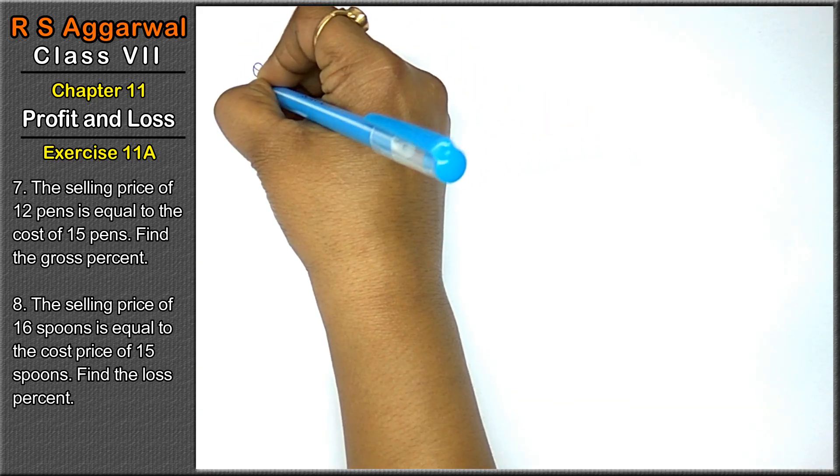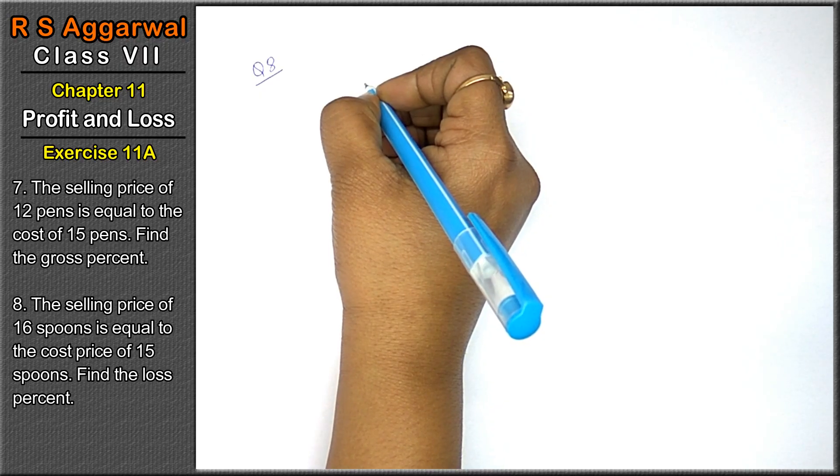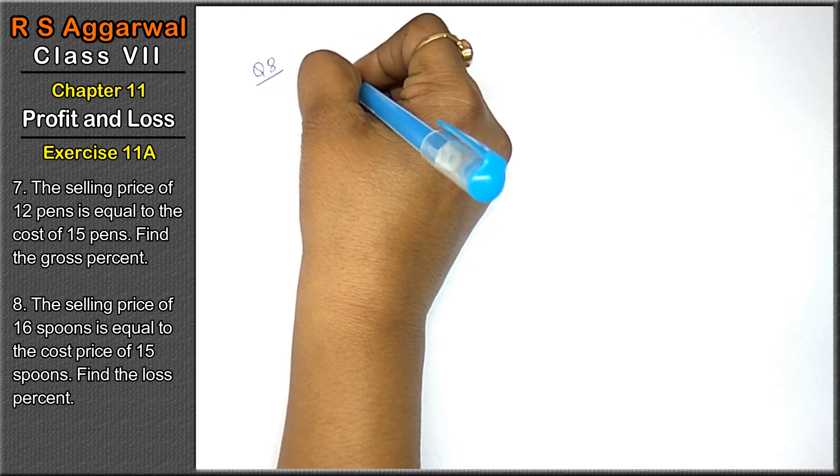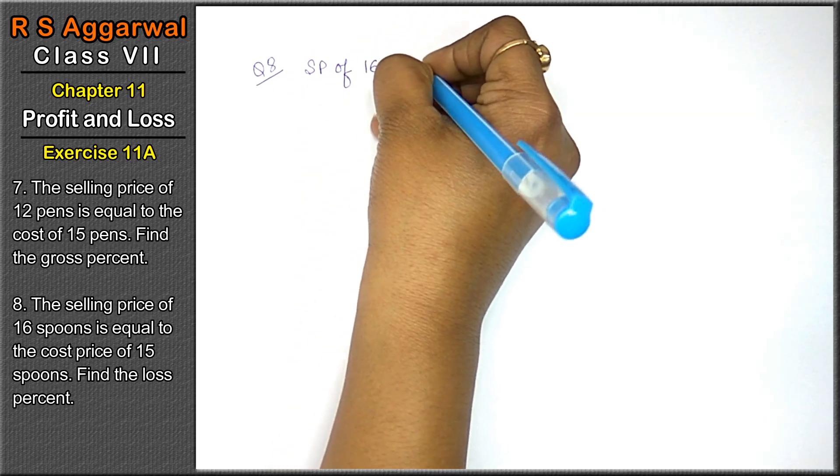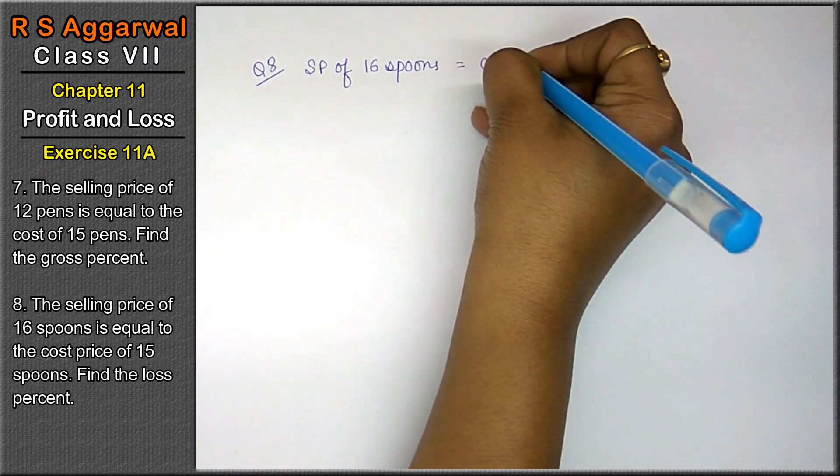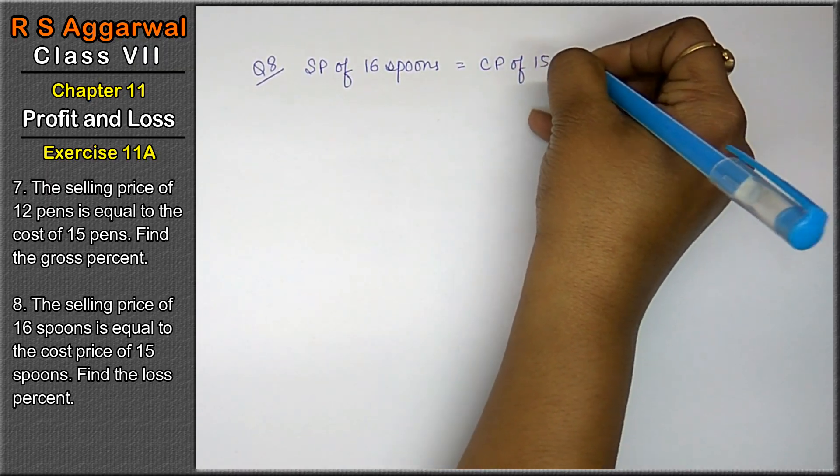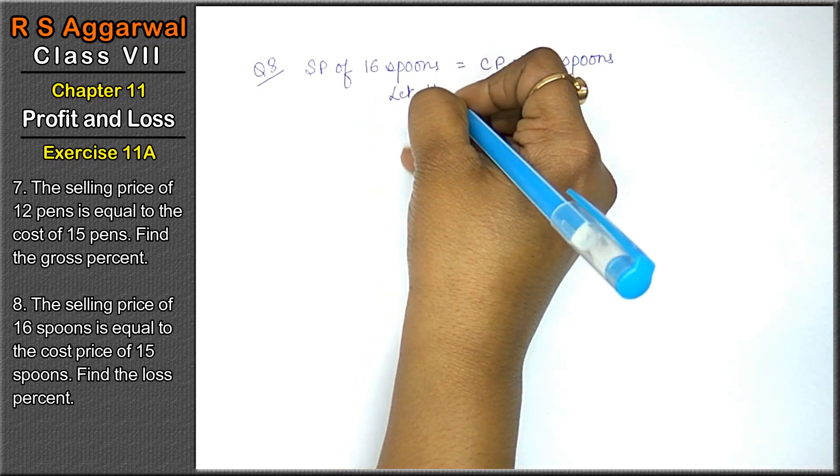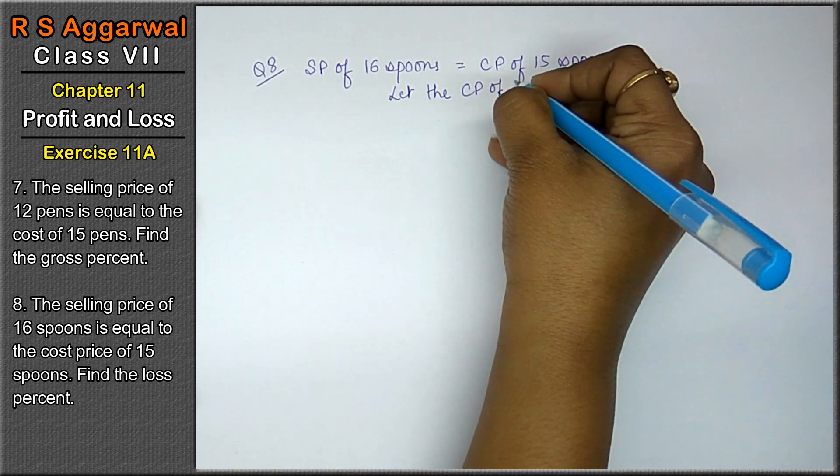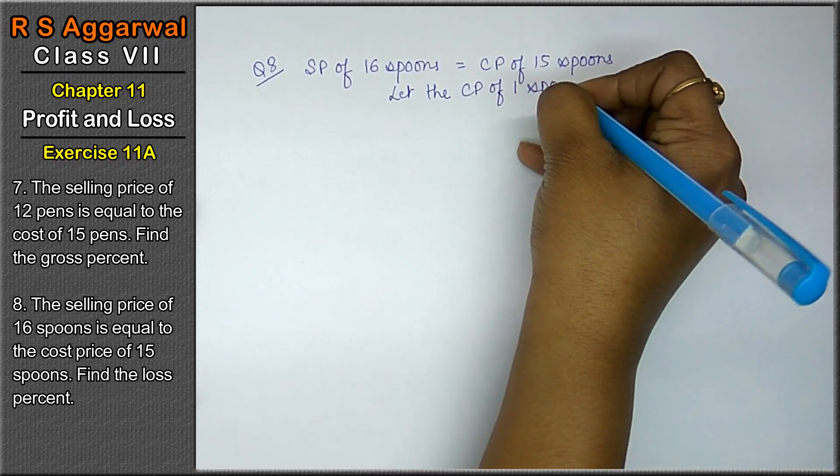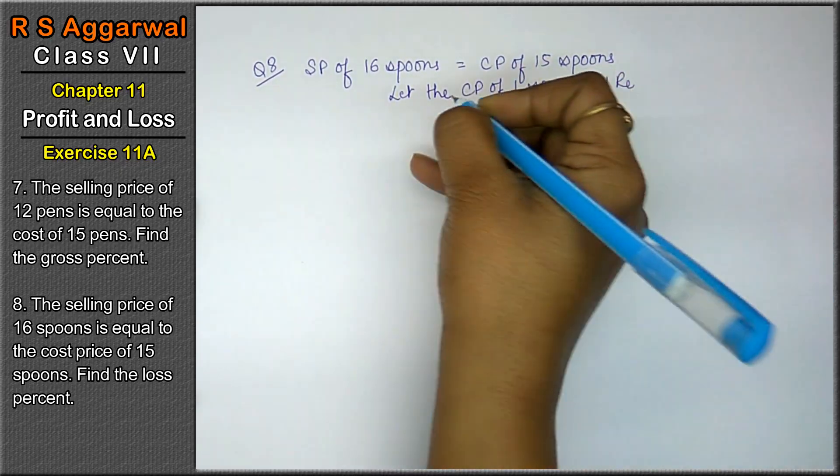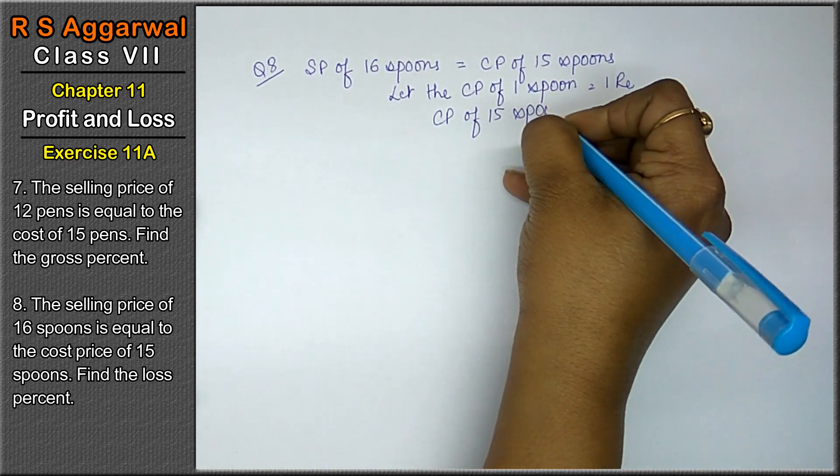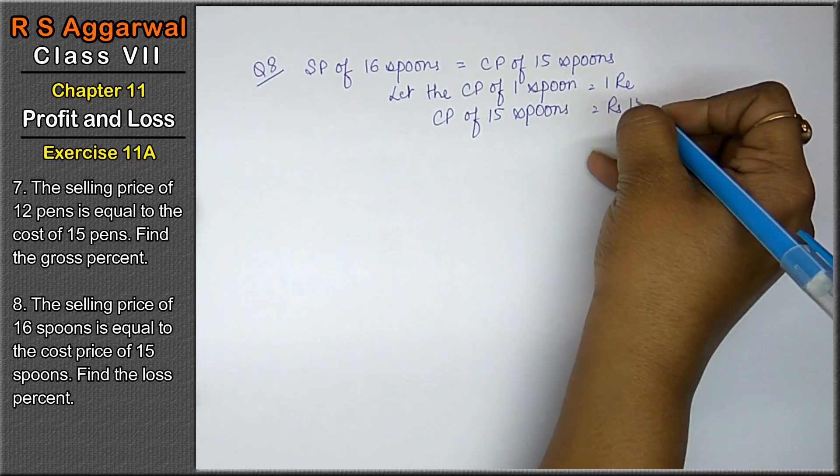Let's do question number 8 of Chapter 11, Profit and Loss, Exercise 11A. Question number 8 is: the selling price of 16 spoons is equal to the cost price of 15 spoons. In this case, let the cost price of 1 spoon equals to 1 rupee.